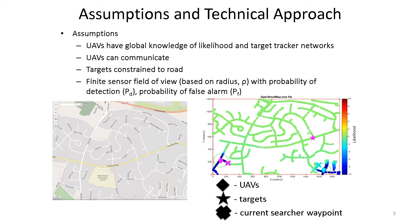We also assume that each of the UAVs can communicate, and they use this likelihood network to communicate with one another and determine where they think the targets are on the road network based on likelihood close to them as well as globally. And since the targets are constrained to the road network, we can assume something about how they're moving and how the likelihood is moving in the absence of measurements. Finally, each UAV has a local field of view, so they can only see a certain subset of the entire road network, and they have a probability of detection and a probability of false alarm in that area.